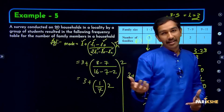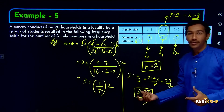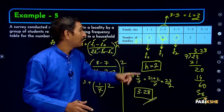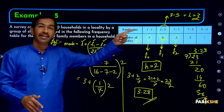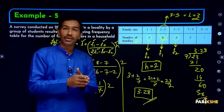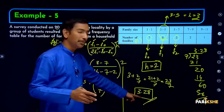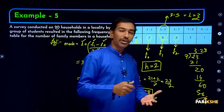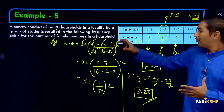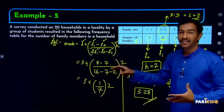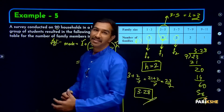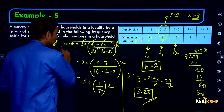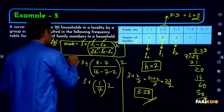This means 3.28 is the number that repeats most often. In terms of family size, this falls between 3 and 4 members — that's 3.28. Using the given grouped data and applying the formula, we get the answer as 3.28.